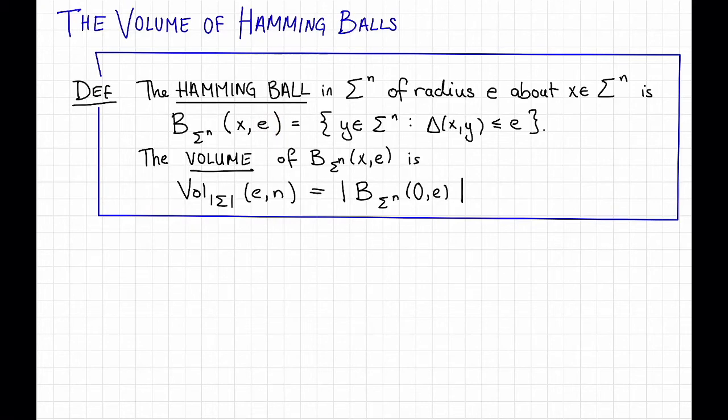Okay, so we have this definition of volume. What actually is it? Well we can write down a formula. The volume of the q-ary Hamming ball of radius e in dimension n. So here we're just taking sigma to be some alphabet of size q.